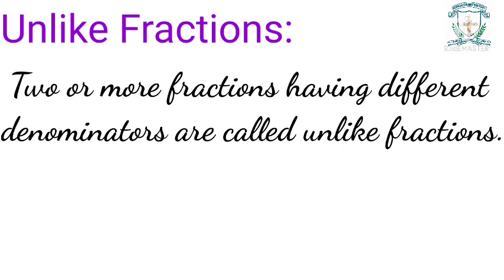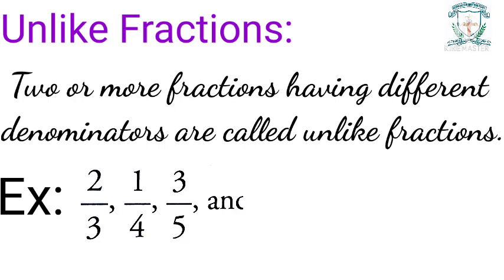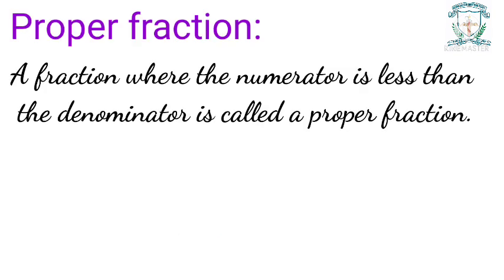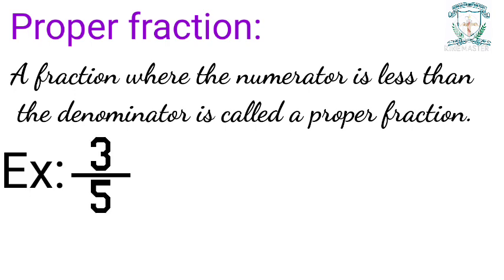Unlike fractions: two or more fractions having different denominators are called unlike fractions. For example, two by three, one by four, three by five, and four by nine. Proper fraction: a fraction where the numerator is less than the denominator is called a proper fraction.